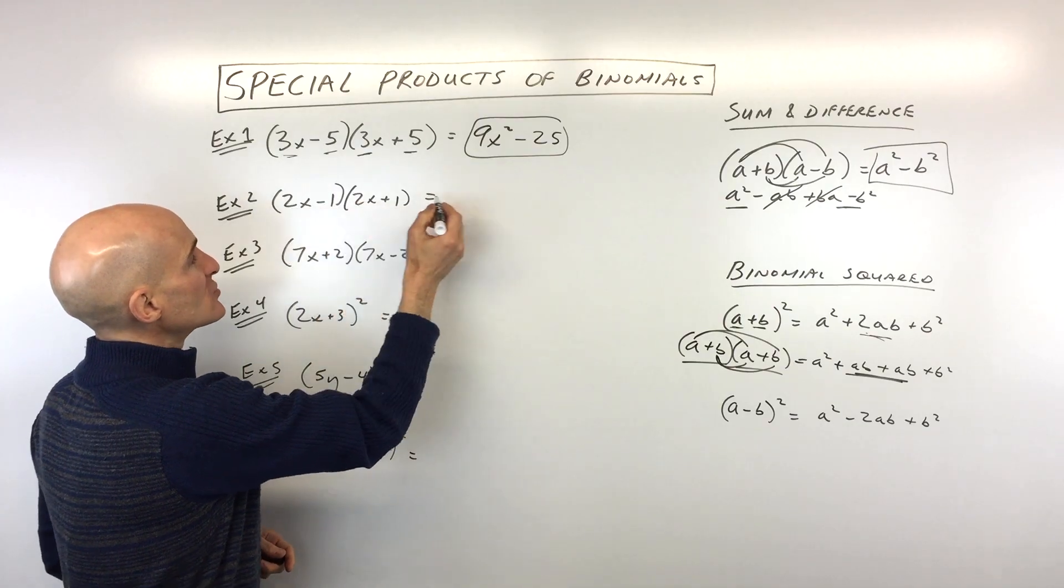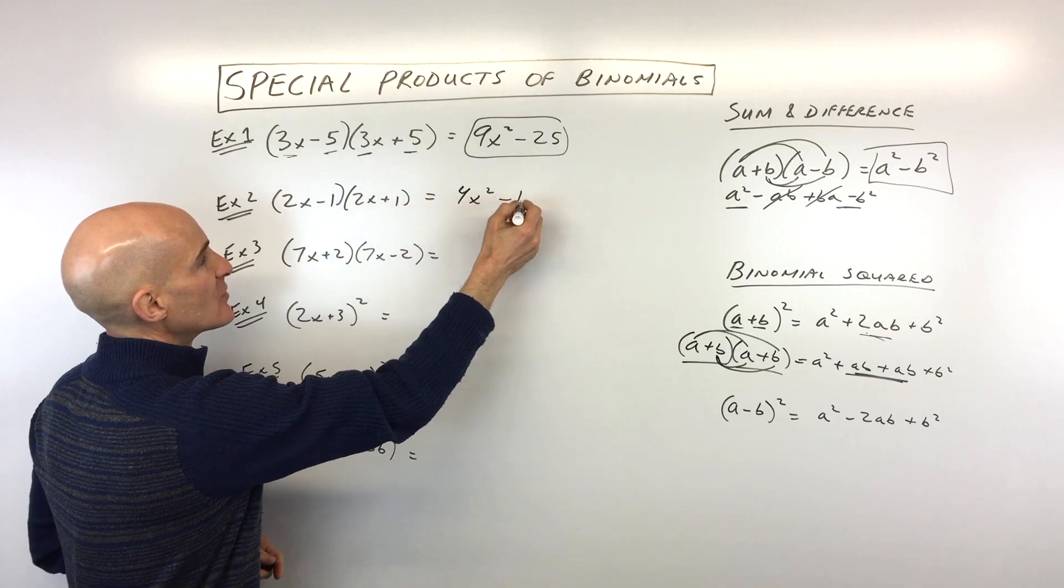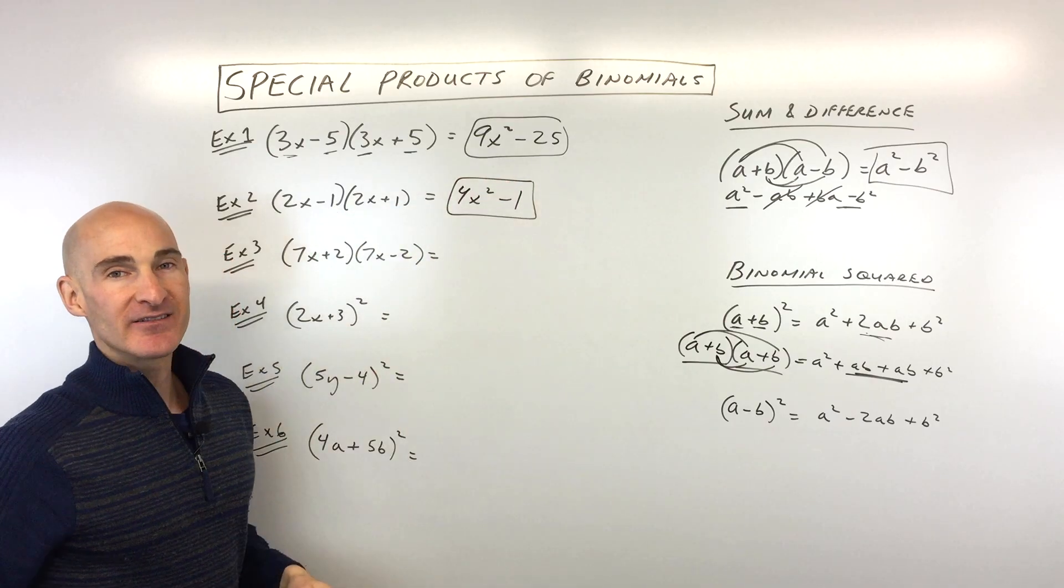So we've got 2x times 2x, which is 4x squared. Negative 1 times positive 1 is negative 1, and that's it. You got it.